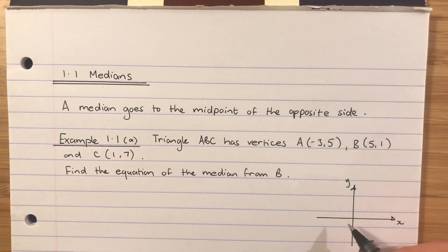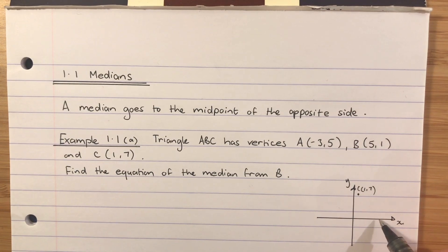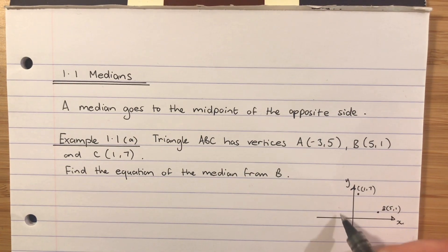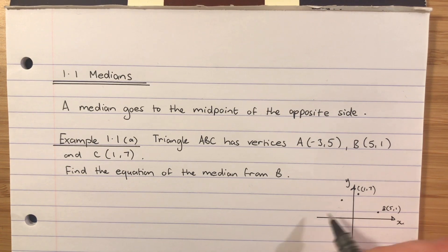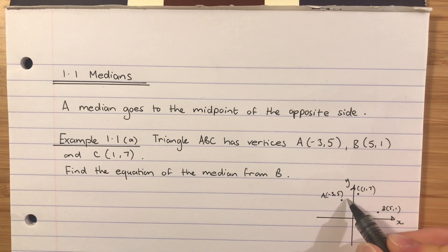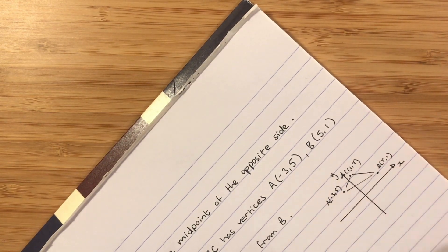Point (1, 7) is point C. 5 across, 1 up is here—that's point B (5, 1). And A is the point (-3, 5), which is about there. So A is the point (-3, 5). So we have this triangle that we are dealing with.